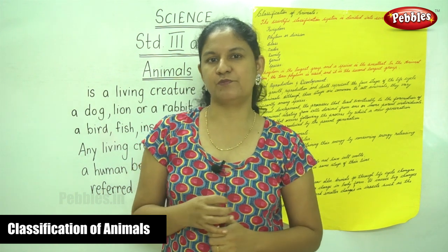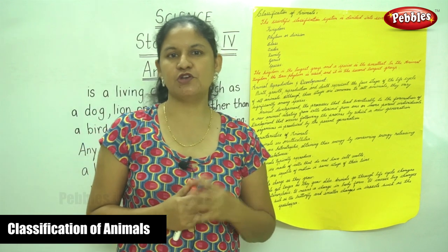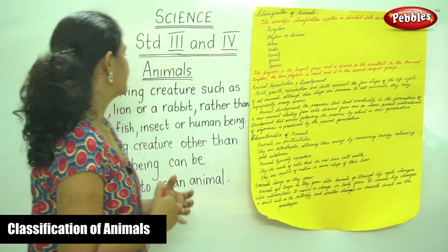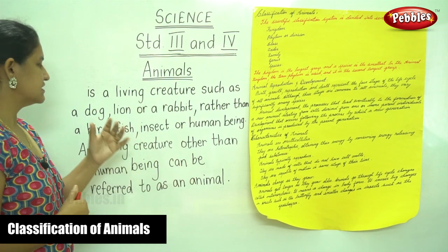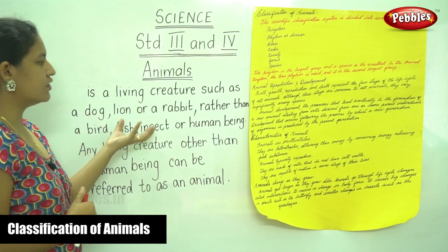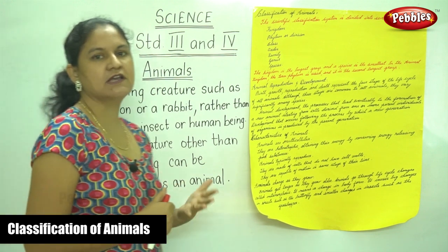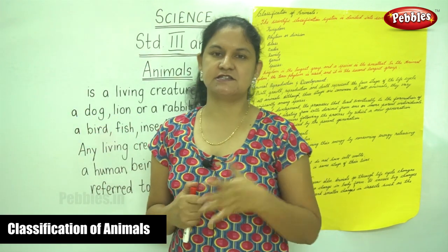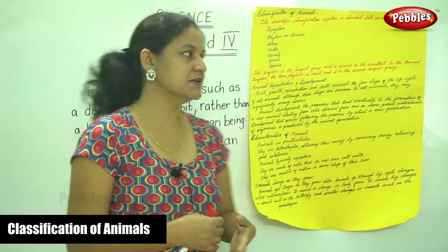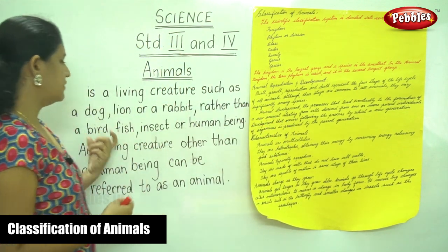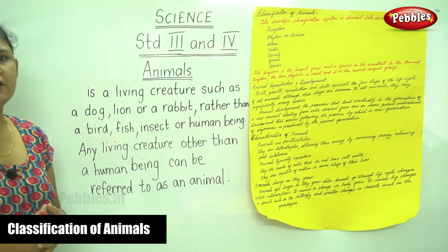Now our topic will be about animals. So let us see what we mean by animals. An animal is a living creature such as a dog, lion, or a rabbit, rather than a bird, a fish, an insect, or a human being.